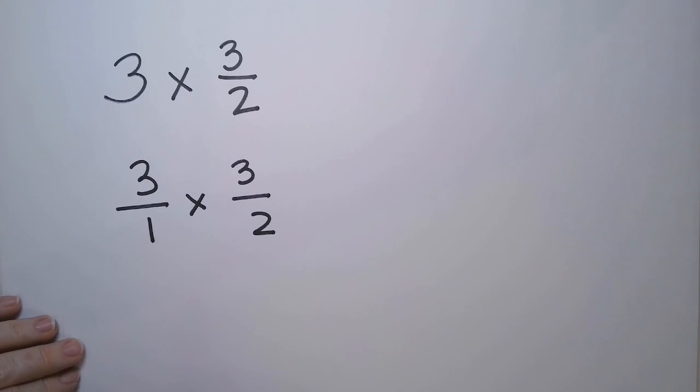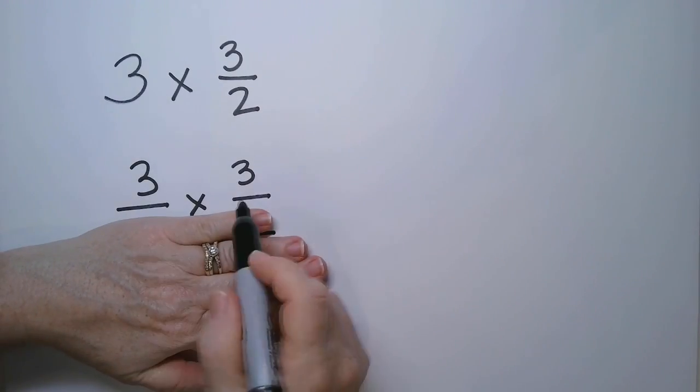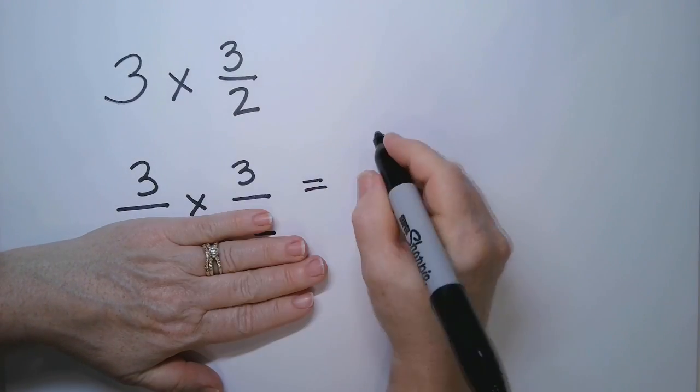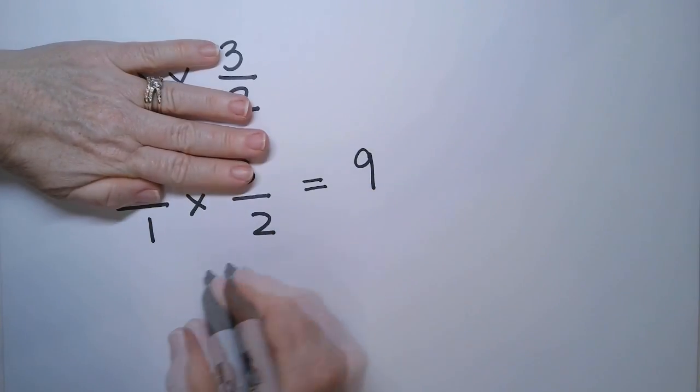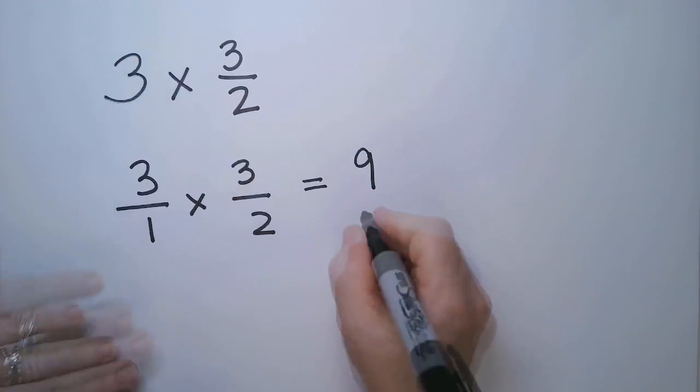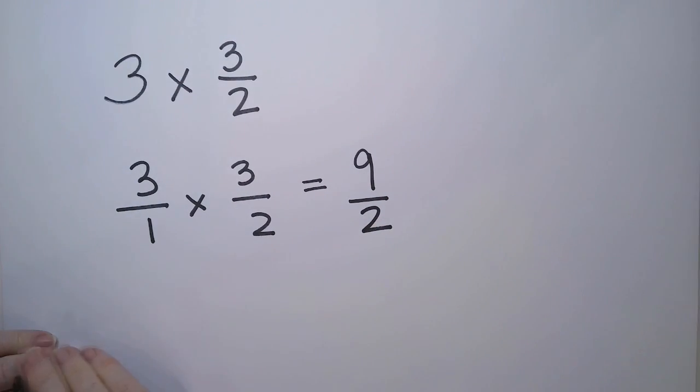And multiplying fractions is easy. You multiply the numerators together, so the numbers on top. 3 times 3 makes 9. And then you multiply the denominators. 1 times 2 is 2. And you have your multiplication done.